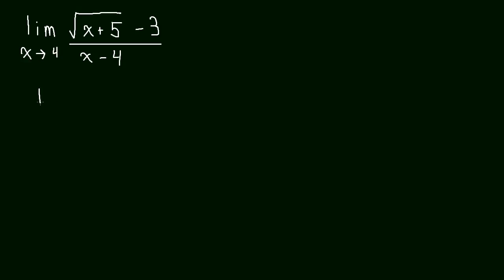So the first step is to remember the difference of squares. We looked at this in the last video. a squared minus b squared is going to factor to a minus b times a plus b. And how does this help us? We don't have a squared minus b squared. We have a square root. But what we do have is what we can think of as an a minus a b.